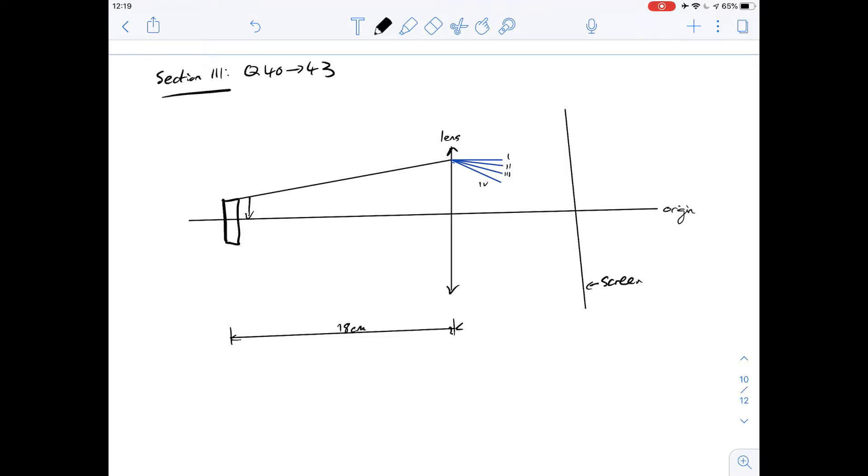Question 40 asks in which direction will the ray of light from the coin emerge after passing through the lens? So the image formed by a converging lens will be inverted, meaning that the ray of light from the top of the coin would end up on the bottom of the screen.